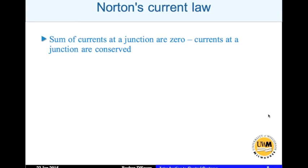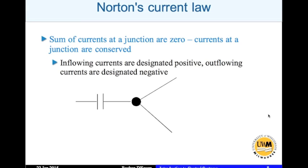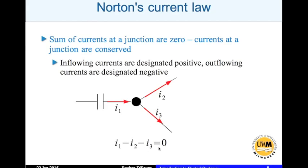Norton's current law states that currents at a node are conserved. If I1 enters a node and I2 and I3 leave, then I1 = I2 + I3. Currents cannot accumulate at a node. Written as a signed equation: I1 − I2 − I3 = 0, where currents entering are positive and currents leaving are negative. These are the basic voltage and current laws we will use, along with the circuit elements covered.